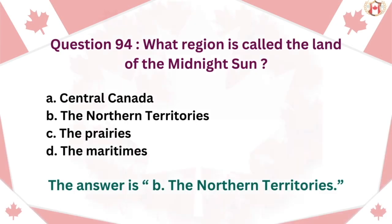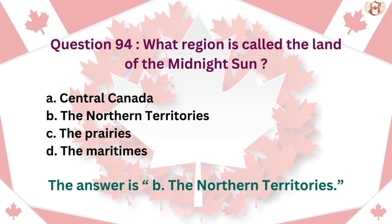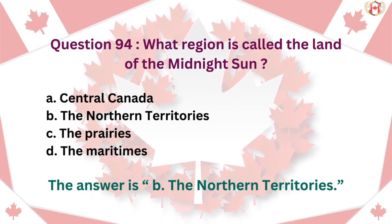Question 94: What region is called the land of the midnight sun? A. Central Canada, B. The Northern Territories, C. The Prairies, D. The Maritimes. The answer is B. The Northern Territories.